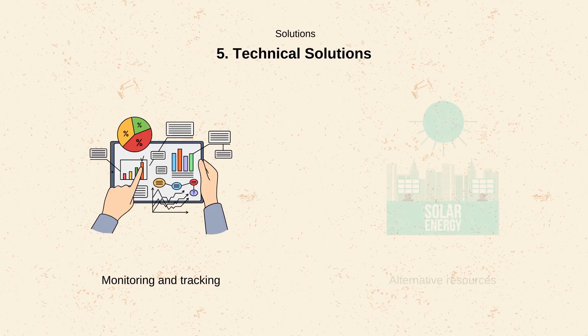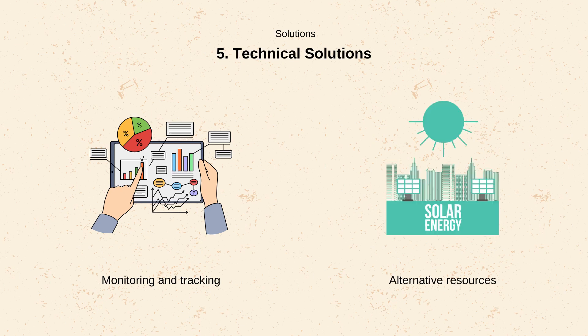Technological solutions. Monitoring and tracking: using technology to monitor resource use, track changes, and detect overuse. Alternative resources: developing alternatives or substitutes to reduce pressure on a common resource.